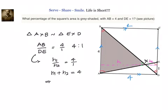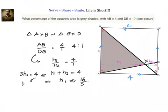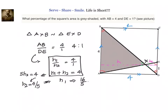From h1 plus h2 equals 4 and h1 equals 4·h2, we substitute to get 5·h2 equals 4, so h2 equals 4 by 5. Therefore h1 equals 4 times h2, which is 16 by 5. The area of the triangle is half times base times height: half into 4 into 16 by 5, which equals 32 by 5 square units.